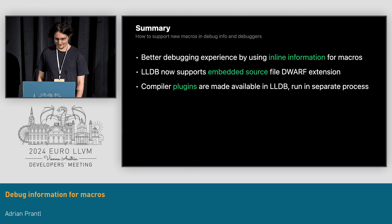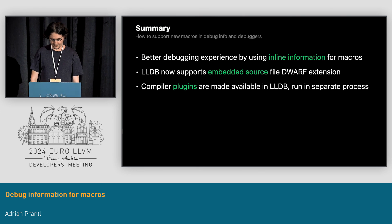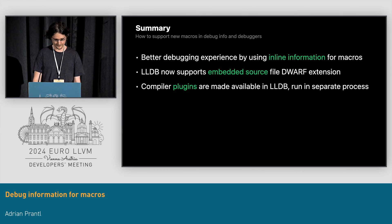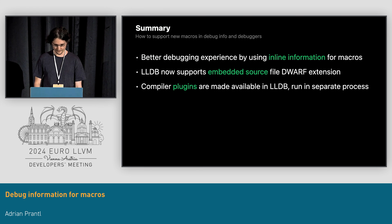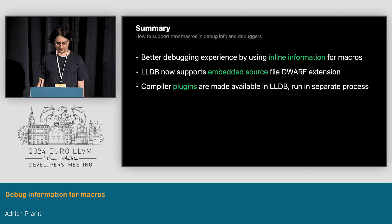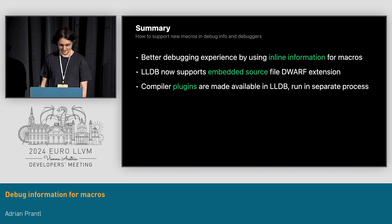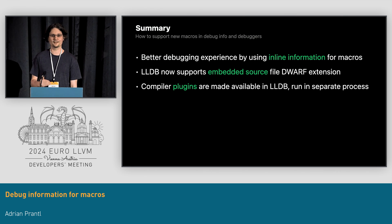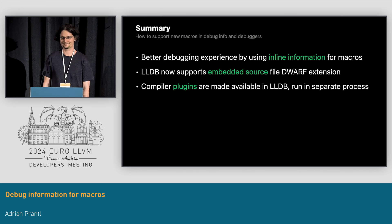That's all I have for you today. We looked at how to implement a rich debugging story for macros in modern programming languages using Swift macros as an example. I highlighted how we can improve source locations by treating macros as inline functions. I showed how to use an upcoming DWARF feature to get a stable representation of macro expansions for debugger consumers. And I showed how we make compiler plugins available in LLDB. I'd be excited if somebody from the community were to try and represent C macros in Clang as inline functions as well. Thank you.